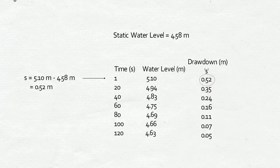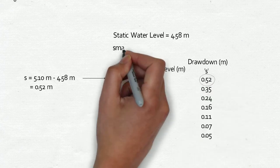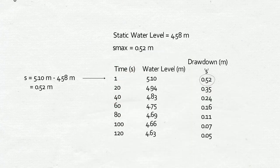Your first value for drawdown was measured as close to time equals zero as possible. This is used as the maximum drawdown. Make a note of this value at the top of your table.